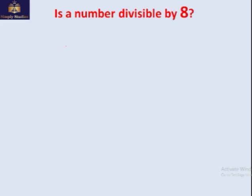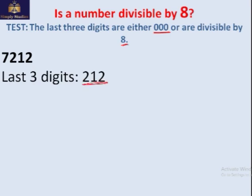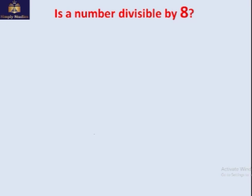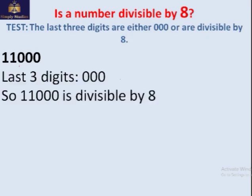Is the number divisible by 8? The rule is: the last three digits should be either 000 or divisible by 8. For 72122, the last three digits are 122 — 122 is not divisible by 8, so the number is not divisible by 8. Let's test 11000 — the last three digits are 000, so the number is divisible by 8. We can confirm: dividing gives no remainder.